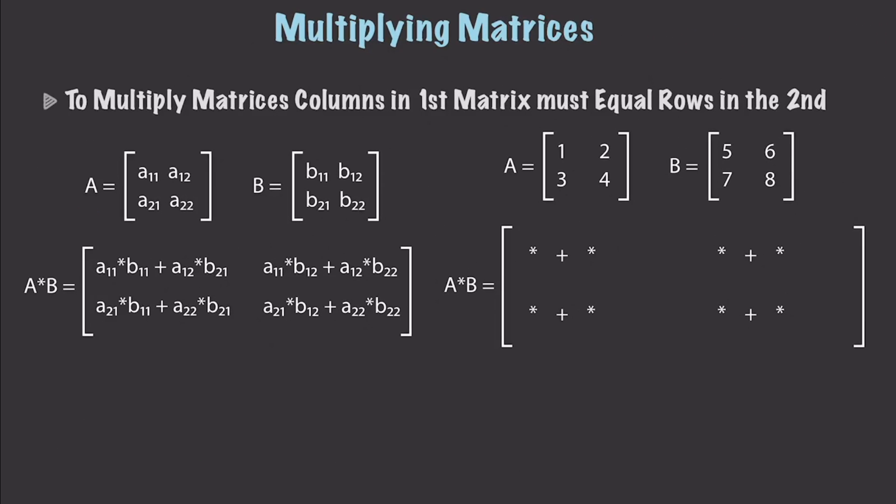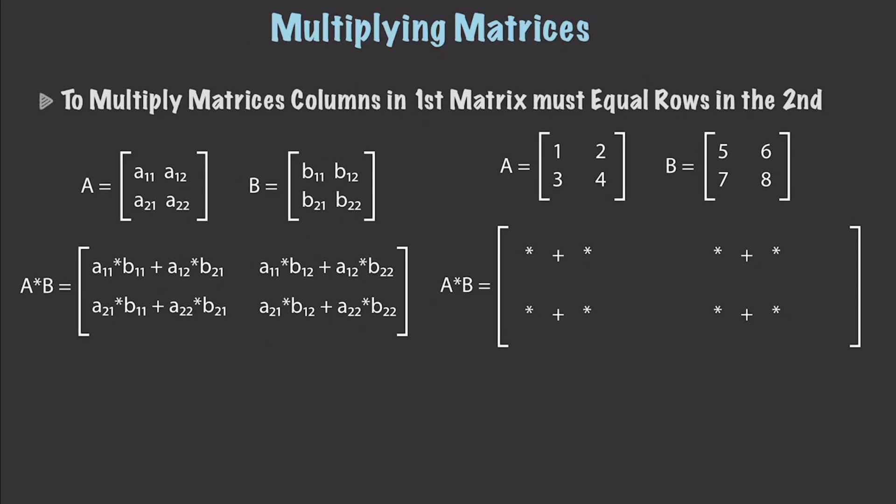Whenever we multiply matrices, first we have to be certain that the number of columns in the first matrix is equal to the number of rows in the second. I'm going to show you this in multiple different ways to verify that you 100% get it.